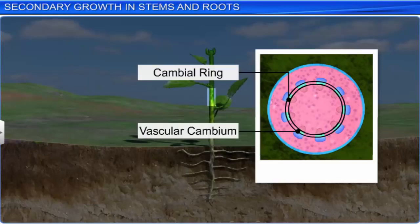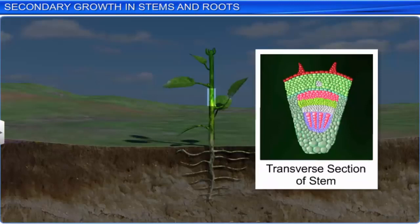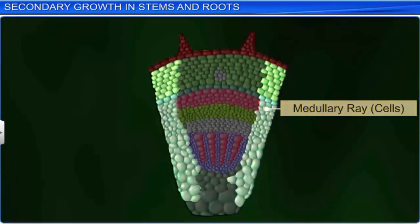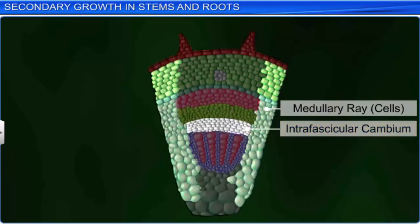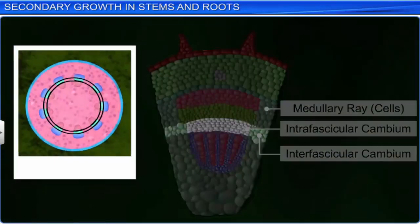When the stem is young, the vascular cambium is present as a patchy single layer. However, in the later stages, it develops into a complete ring also known as the cambial ring. When the secondary growth of a stem begins, a process of differentiation takes place in the cells of the medullary rays. These cells, located next to the intrafascicular cambium, become meristematic in nature and lead to the formation of the interfascicular cambium. Thus, the fusion of intrafascicular cambium and the interfascicular cambium results in the formation of a continuous ring of cambium, or the cambial ring.